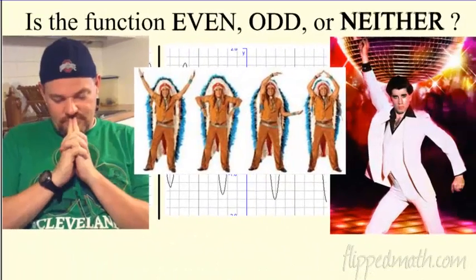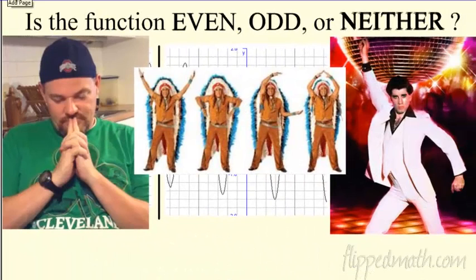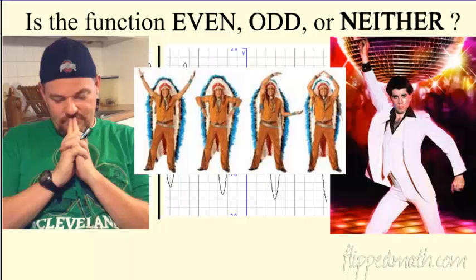So let's look at some graphs. Are these functions even, odd, or neither? Before we get to the actual graphs, let's look at a couple pictures. The first picture — look at Mr. Sullivan. You might think this is an odd picture, he's got his hat on backwards. But he's actually symmetric here — which means he is actually even. Mr. Sullivan is actually an even function.